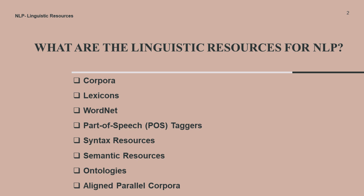Then there are ontologies. Ontologies are structured knowledge representations that define concepts, relationships, and properties in specific domains. They provide a semantic framework for understanding and organizing information. Examples of ontologies used in NLP include WordNet, DBpedia, and various domain-specific ontologies such as medical ontologies or financial ontologies.